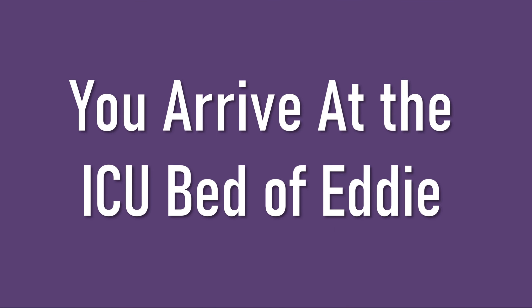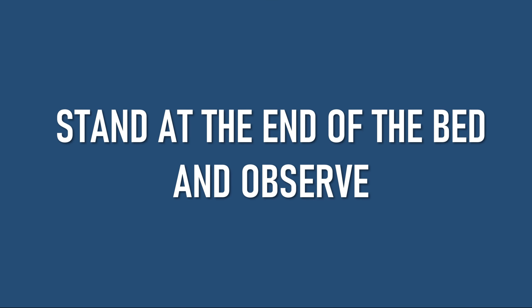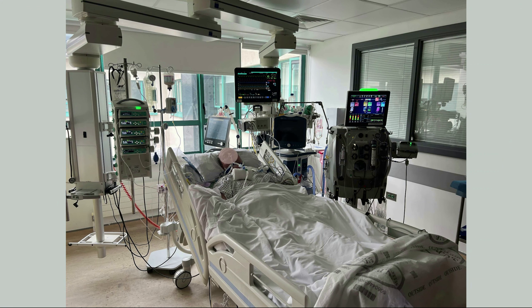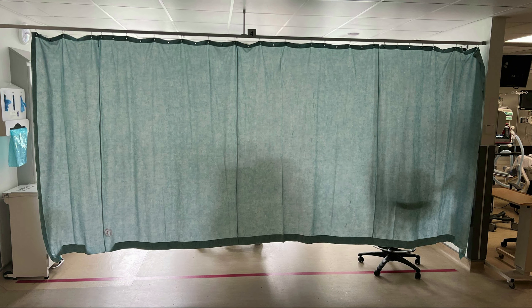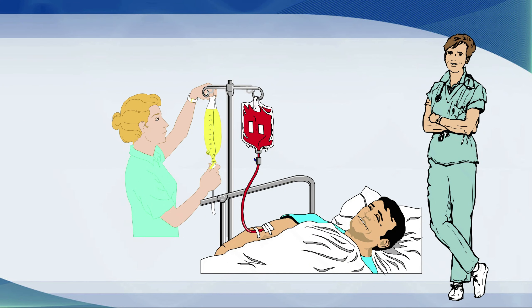Let's start with a scenario. You arrive at the ICU bed of Eddie. When you arrive at a bedside you need to take in the scenery, have a good look around, stand at the end of the bed and observe. We can see Eddie here in the bed, but what we're going to do is close the curtains and find out all about him by taking a history. We're going to try and glean the typical information that you will need to do a basic handover in the ICU. Obtaining a history in the ICU is not easy. The patients are rarely in a position to give you much information, so you need to utilise the knowledge base of the bedside professionals.